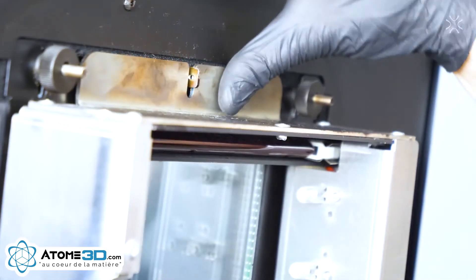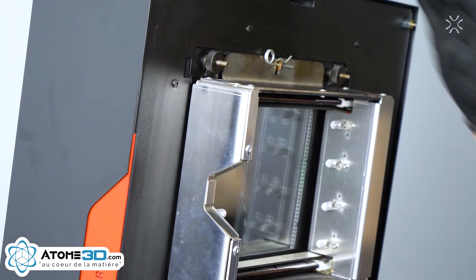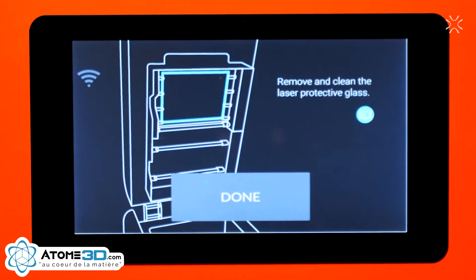Close the heating module. Put the split pin back. After the laser protective glass is reinstalled in the printer, press Done.